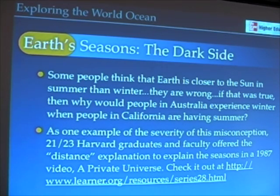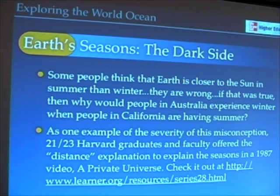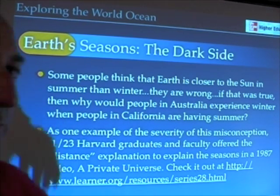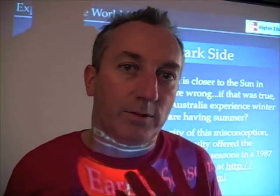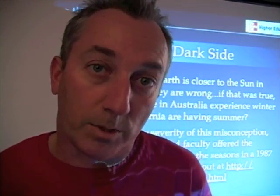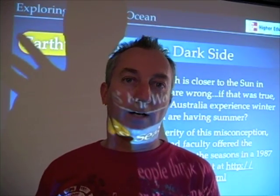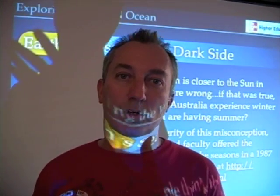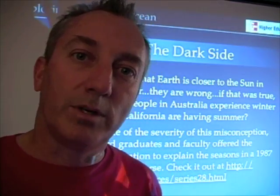They explained the seasons as occurring because the Earth was either closer to or further away from the sun. That seems reasonable, right? If you stand closer to a fire, it's warmer. If you stand further away from the fire, it's cooler. But you have to remember...